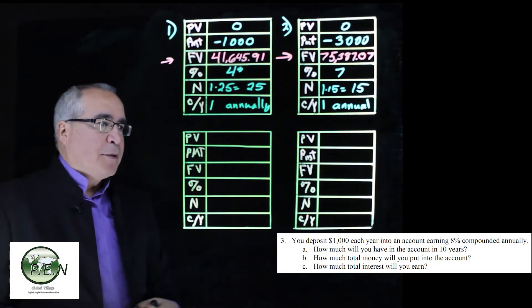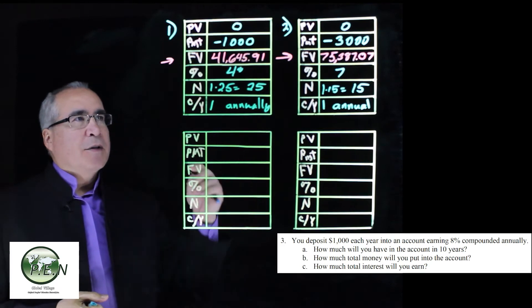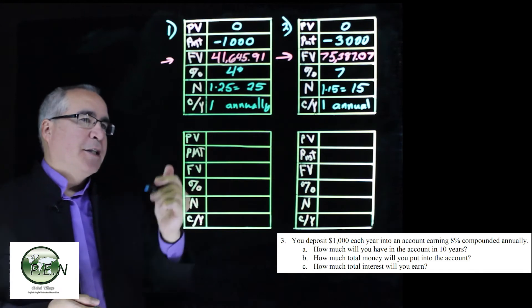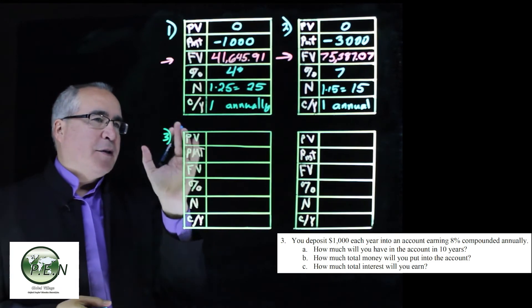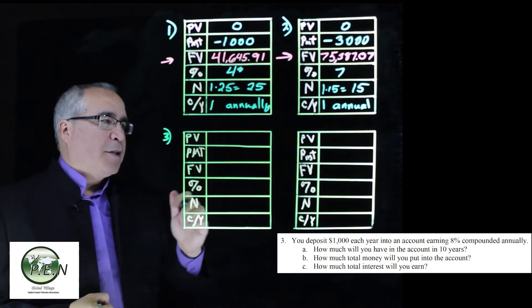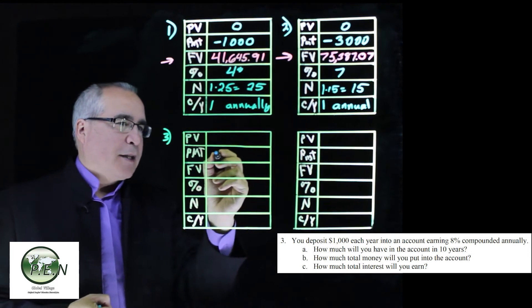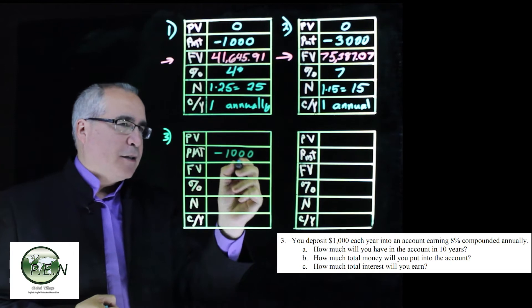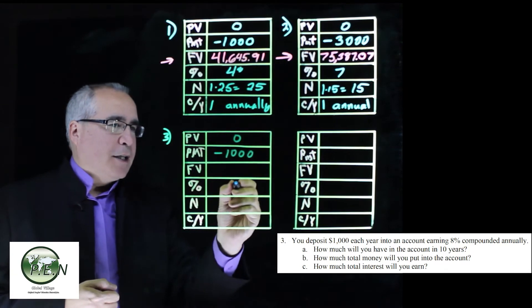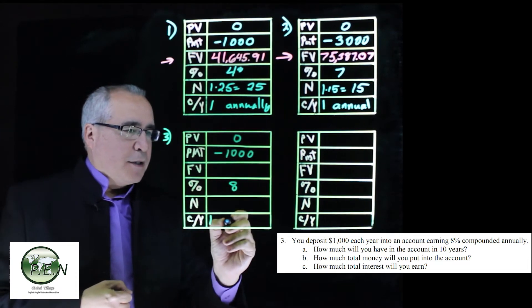Let's take a look at number three. And then in four, we're going to get an additional calculation. We're going to figure out how much we put in so that we can figure out how much interest we earned. For three, we do the same thing. We need to know what our future value is going to be, how much we're going to have in there. We deposit $1,000 each year into an account, regular deposits. It's not an upfront one, it's a regular amount. Earning 8%, compounded annually, that's important, so it's one.